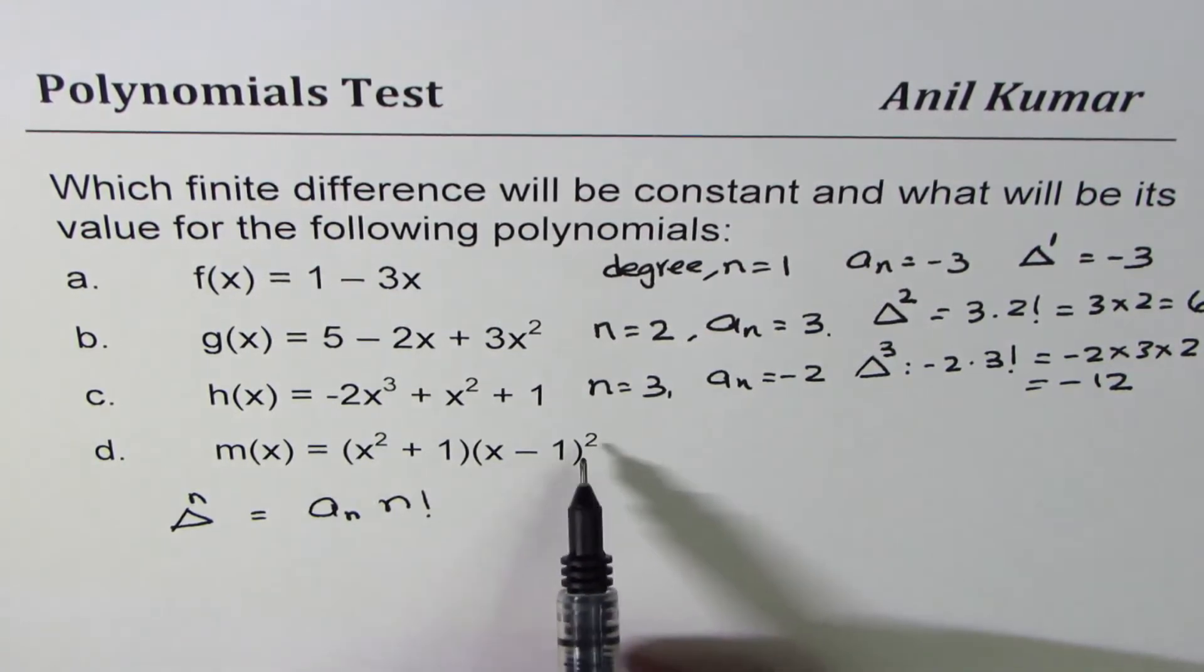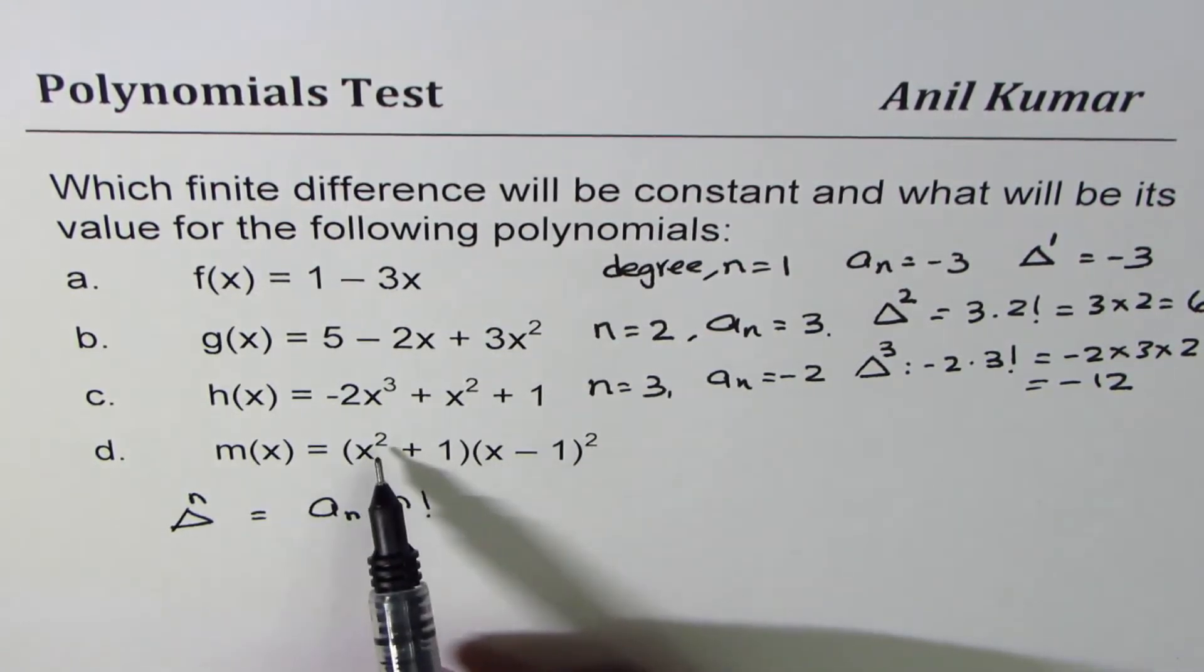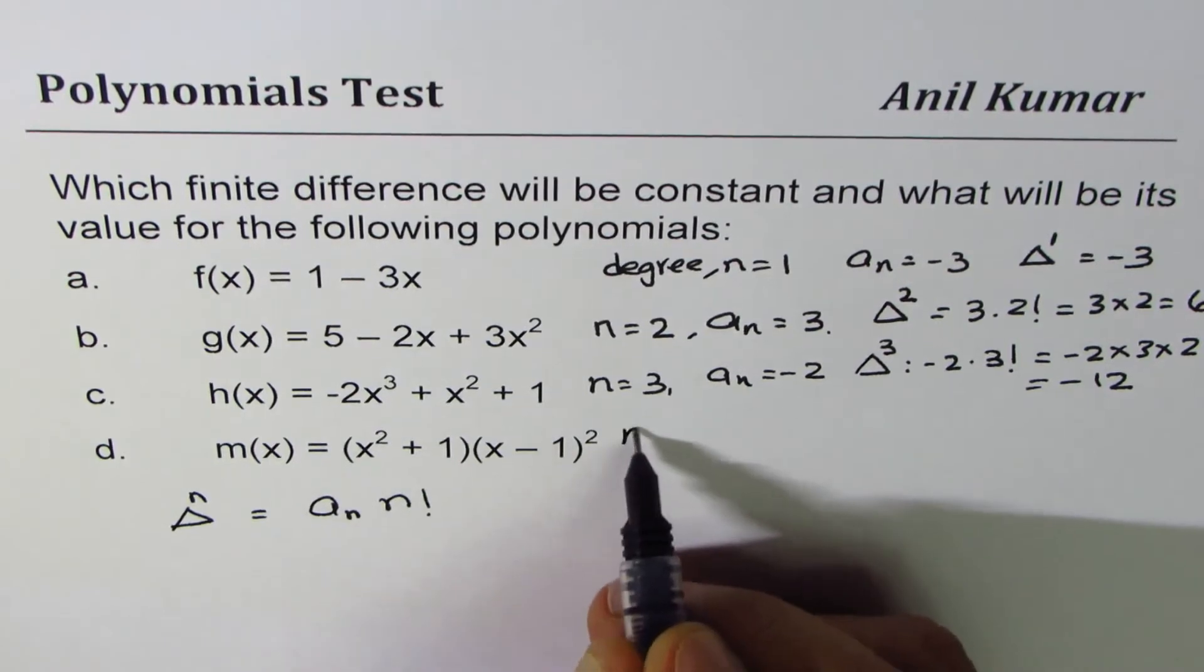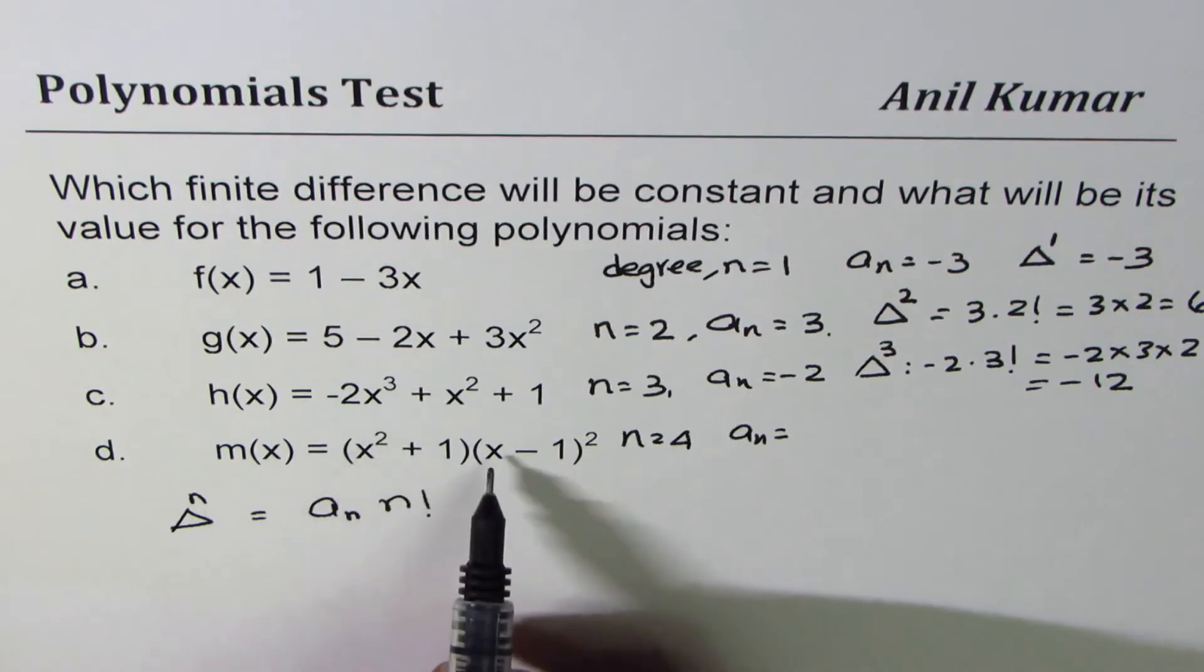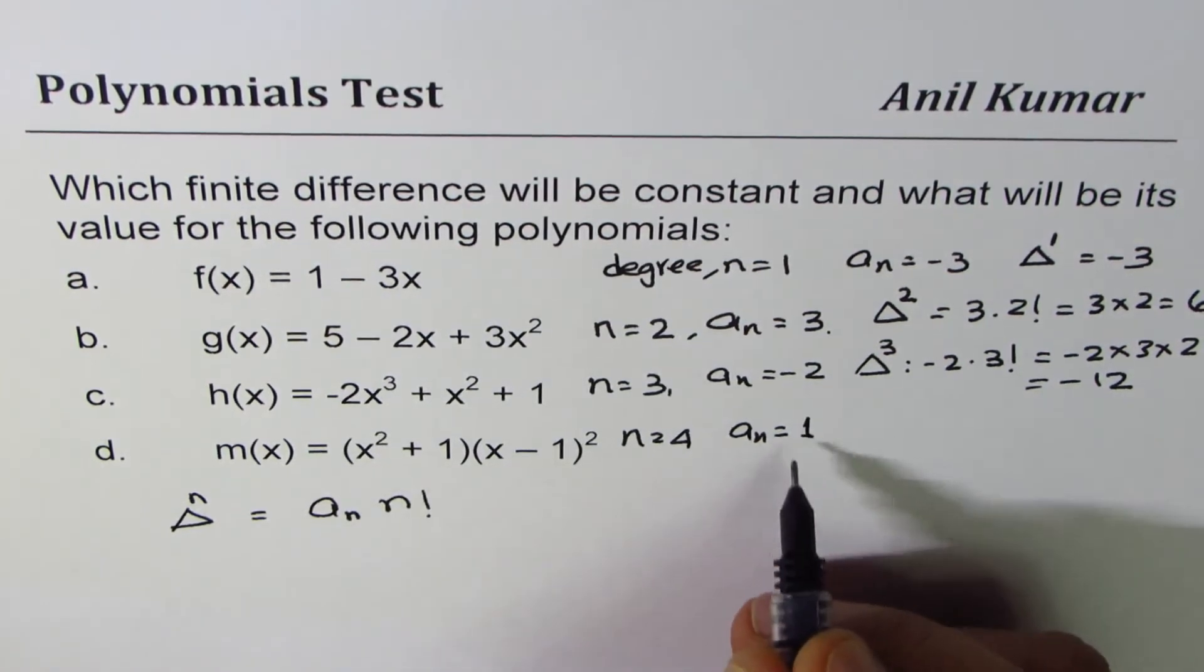Now in this particular case, the degree is 2 and 2, 4. So n is 4. Leading coefficient is when you multiply x squared and x squared, you get 1, positive 1.